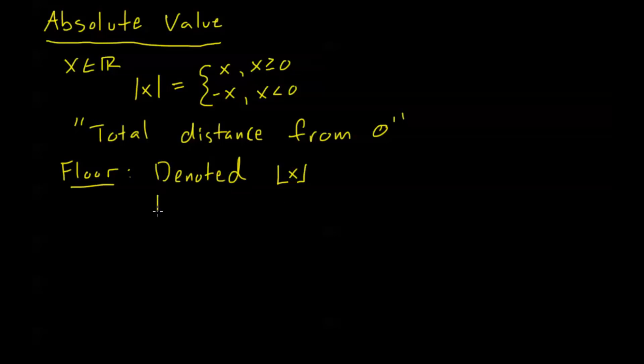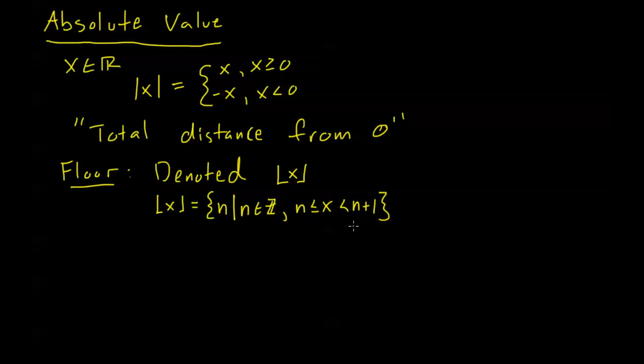The way that I define this, I'm actually going to define it in set notation. The floor of x is defined to be the number n, where n is an integer, and n is less than or equal to x, and x is strictly less than n plus one. So we know if n is an integer, then n plus one is going to be the next integer up. So the floor of a number is the largest integer less than or equal to x. If x is an integer, then the floor of x is just going to be x.